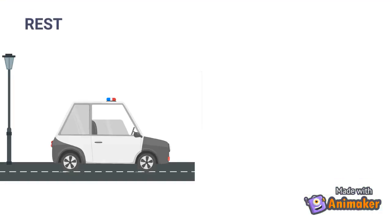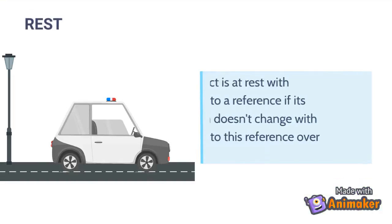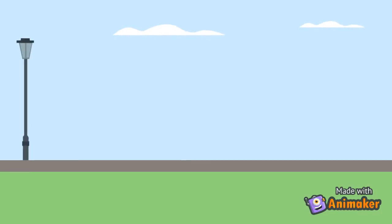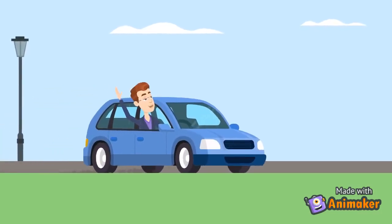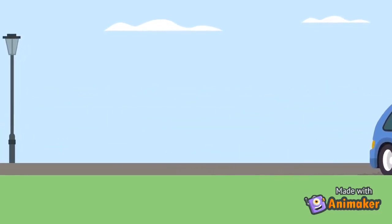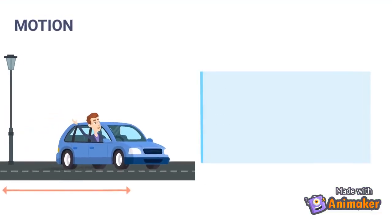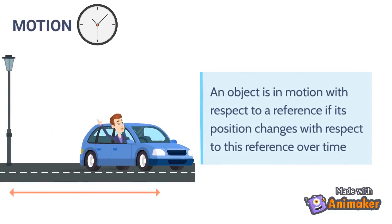An object is at rest with respect to a reference if its position doesn't change with respect to this reference over time. This car is in motion relative to the lamp post. An object is in motion with respect to a reference if its position changes with respect to this reference over time.